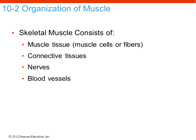Muscle consists of muscle tissue but must also have connective tissue to compartmentalize the muscle and attach it to bones so that movement can occur. Nerves are essential to muscle function because the command for contraction starts in the brain or spinal cord and arrives at the muscle via a nerve. Blood vessels are obviously essential, supplying large amounts of oxygen and nutrients and carrying away waste products.